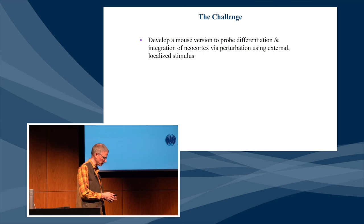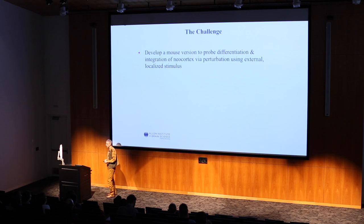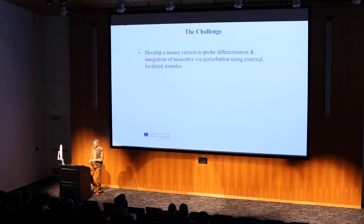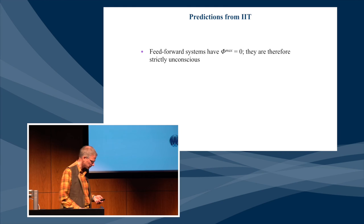So the challenge now — and I'll talk about a number of ongoing experimental paradigms — is to develop a mouse version to probe this measure of differentiation and integration in cortex. Not using TMS, which wouldn't be appropriate for the much smaller mouse cortex, but using local electrical stimuli, and then using a large-scale measure of cortical activity that we can obtain at the cellular level in the mouse to estimate phi.